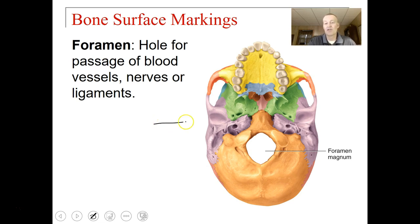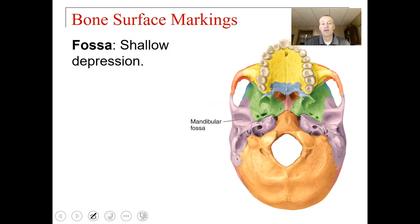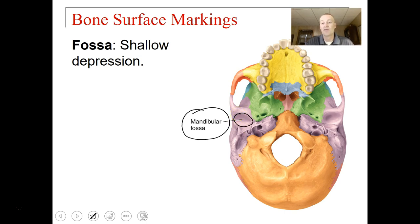The skull is a complete structure that wraps around your brain — so how do blood vessels get in? How do nerves and veins get out? They go through fissures or foramen. The foramen magnum is a large hole in your occipital bone for the passage of the spinal cord out of the skull. A fossa is a shallow depression — your mandible, your lower jaw, fits into your temporal bone via the mandibular fossa.